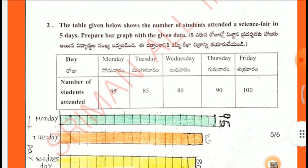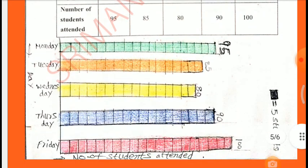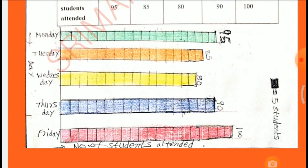The table below shows the number of students attending a science fair over five days. Prepare a bar graph with the given data. Monday 95, Tuesday 85, Wednesday 80, Thursday 90, Friday 100. One box represents 5 students.